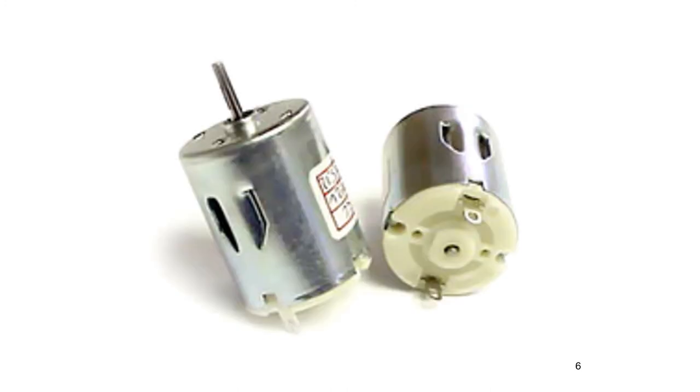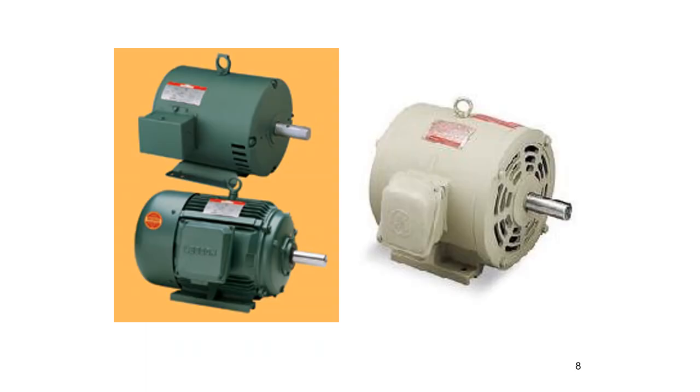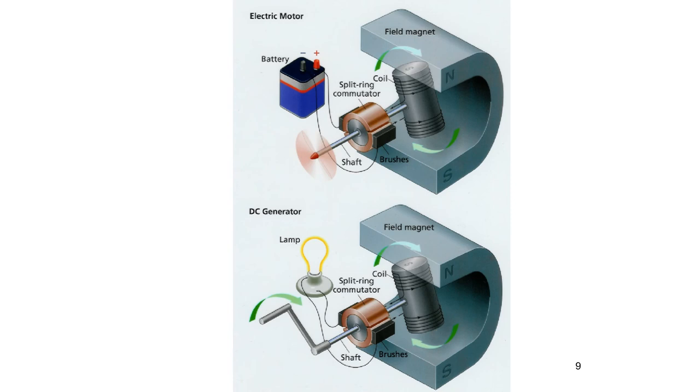Here's some small motors. This is what you find in a toy or an RC car. They look like that on the inside. There's some larger motors. And here's a comparison of the core correspondence, if you want.